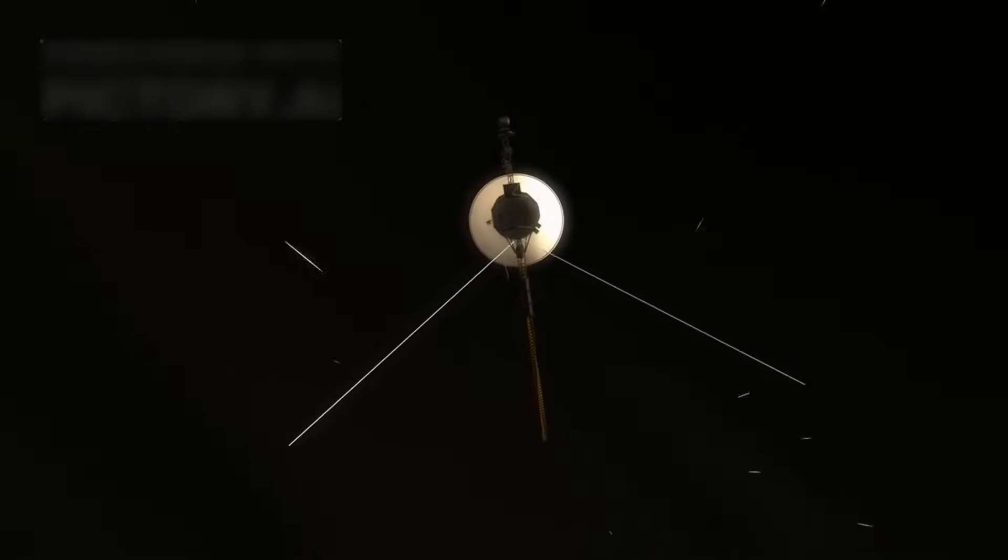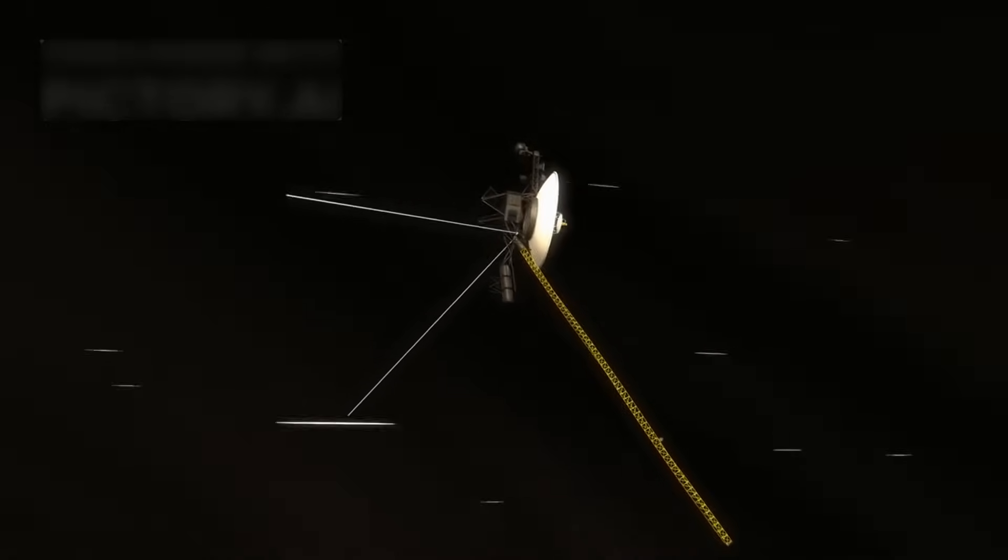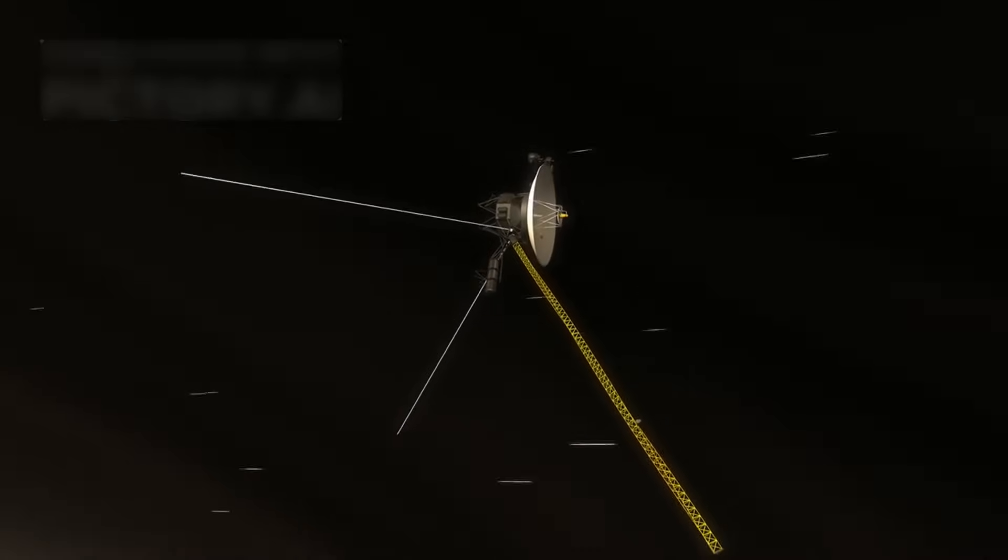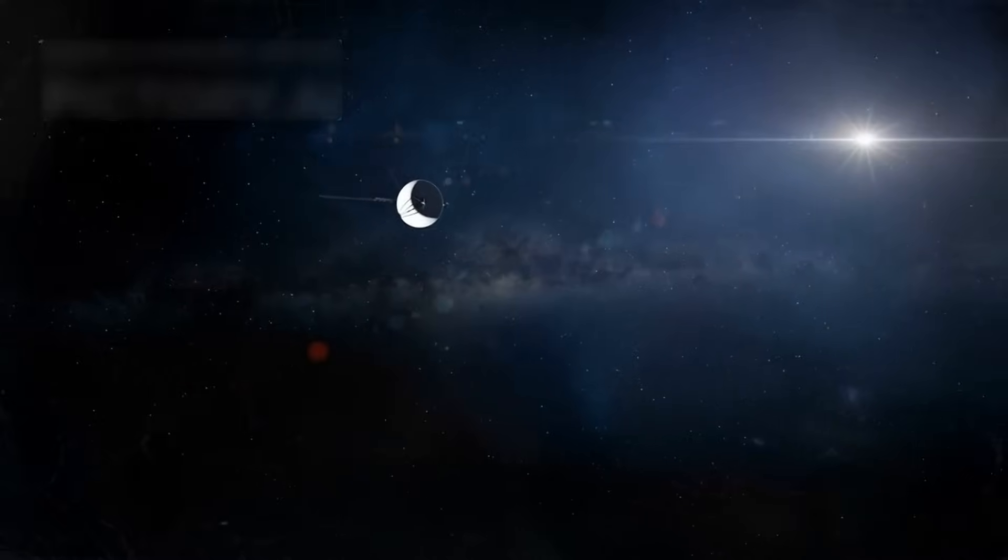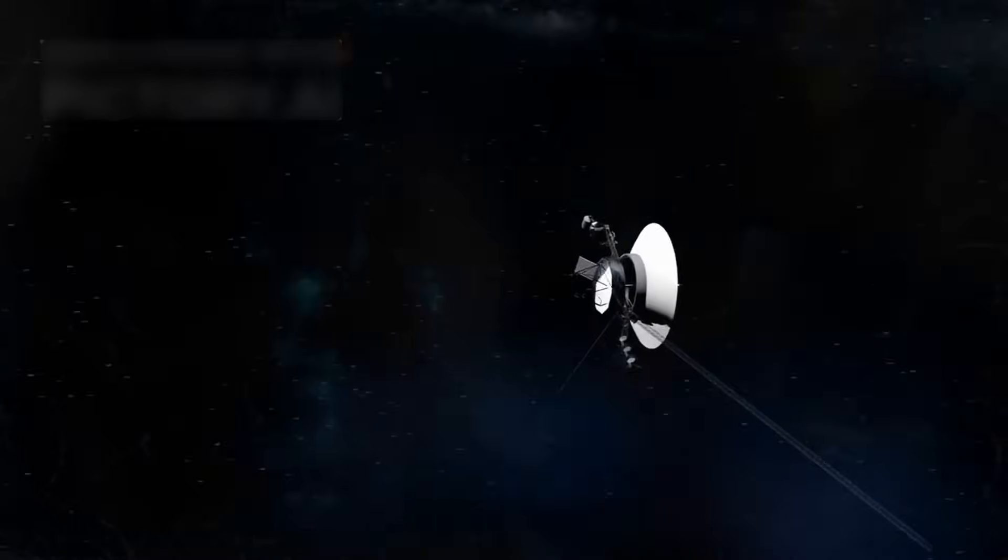With only 69 kilobytes of memory, less than a car key's chip, and a transmitter as weak as a refrigerator bulb, it moved farther than anything before it. Even now, billions of miles away, it sends signals back to Earth through the deep black darkness.